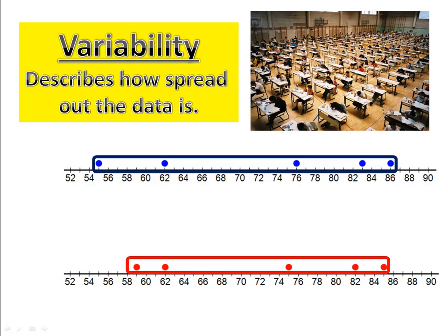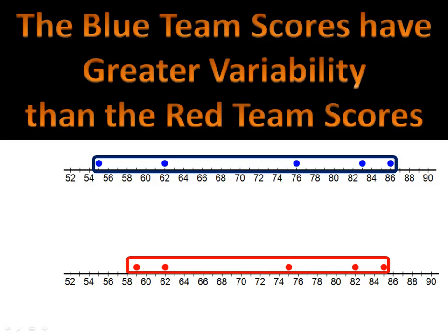That's because the red values are less spread out than the blue values. The blue values, because they're more spread out, have greater variability than the red values. It's also worth noting that less variability means that the scores, or the data values, are more consistent with one another. We say that the blue team scores have greater variability than the red team scores because the blue team scores are more spread out.